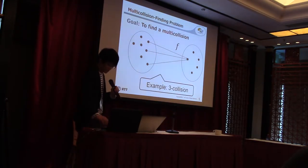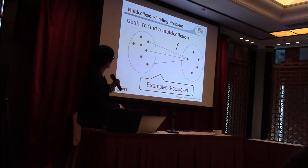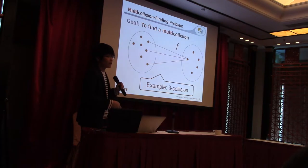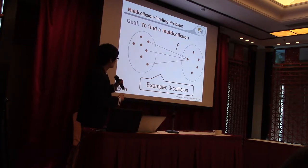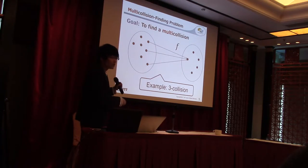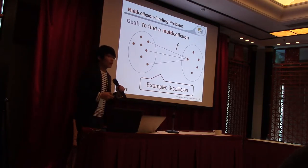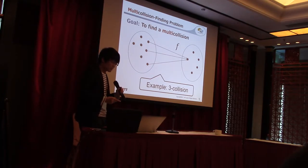In our paper, we focus on the generalized problem: the multi-collision finding problem. In this problem, our goal is to find the multi-collision of f. The definition of multi-collision is the tuple of elements in the domain of f which are mapped to the same value by f. This picture illustrates the example of a three-collision. We can similarly consider four-collision, five-collision, six-collision, and general L-collision.